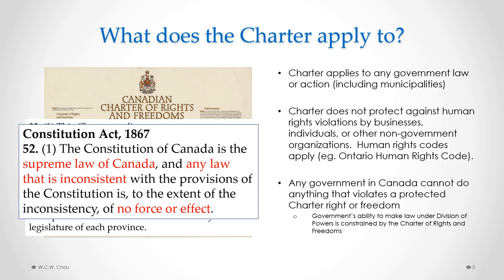If you remember Section 52 from the Constitution Act 1867, it says that the Constitution of Canada is the supreme law of Canada, and that any law that is inconsistent with the Constitution is of no force or effect. So in applying that section in the context of the Charter, it means that any government in Canada cannot pass any law or do anything that violates a protected Charter right or freedom. In other words, a government's ability to make law under the division of powers is constrained by the Charter of Rights and Freedoms — those laws cannot violate the Charter.